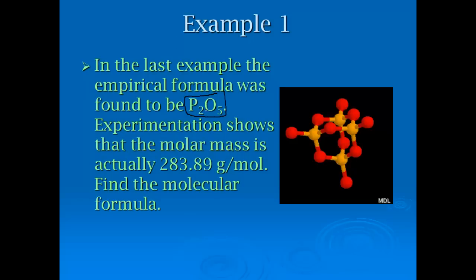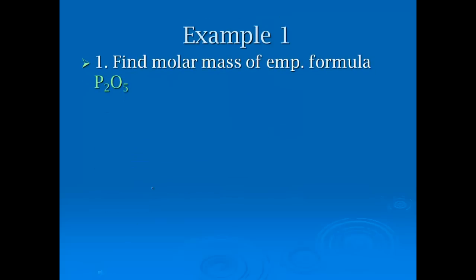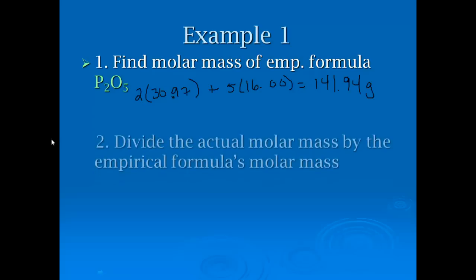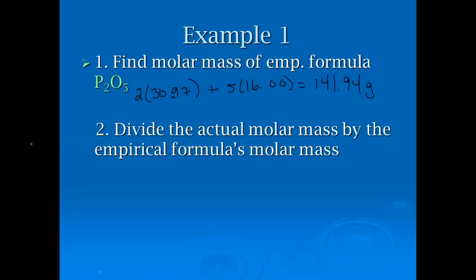The last example, the empirical formula was found to be P2O5, diphosphorus pentoxide. Experimentation shows the actual molar mass is 283.89. We want to know the molecular formula. Here is the actual molar mass they gave me. The next step is we have to find the molar mass of the empirical formula. If they're the same, then we know it's going to be exactly the same. If I find phosphorus on the periodic table, the molar mass is 30.97. There are two of them. I have to add that to 5 times 16.00. I end up with 141.94, which is not what they gave me.